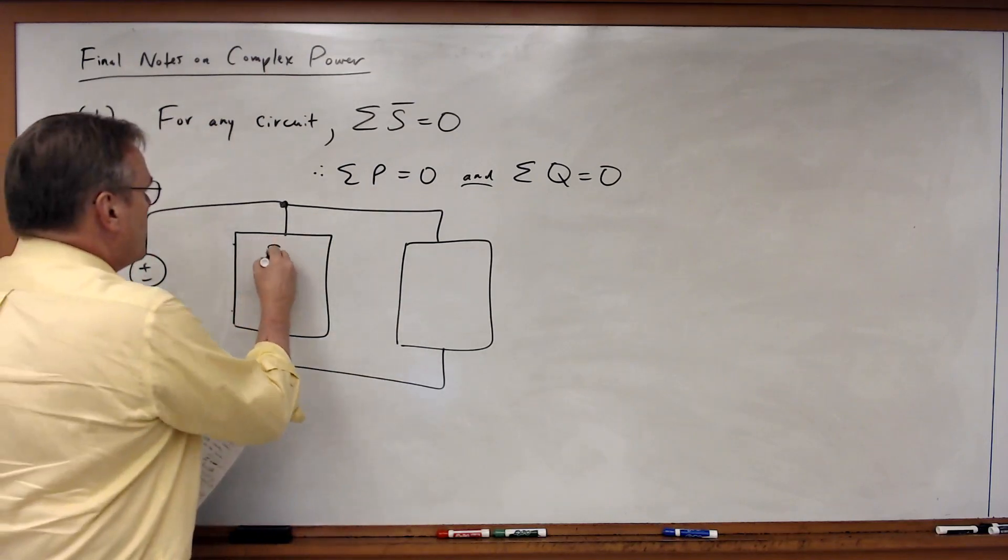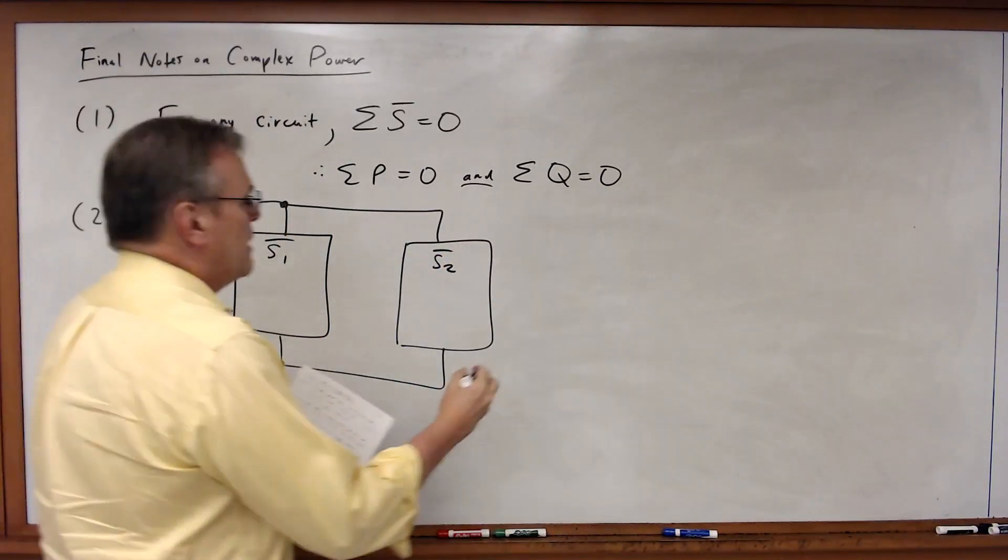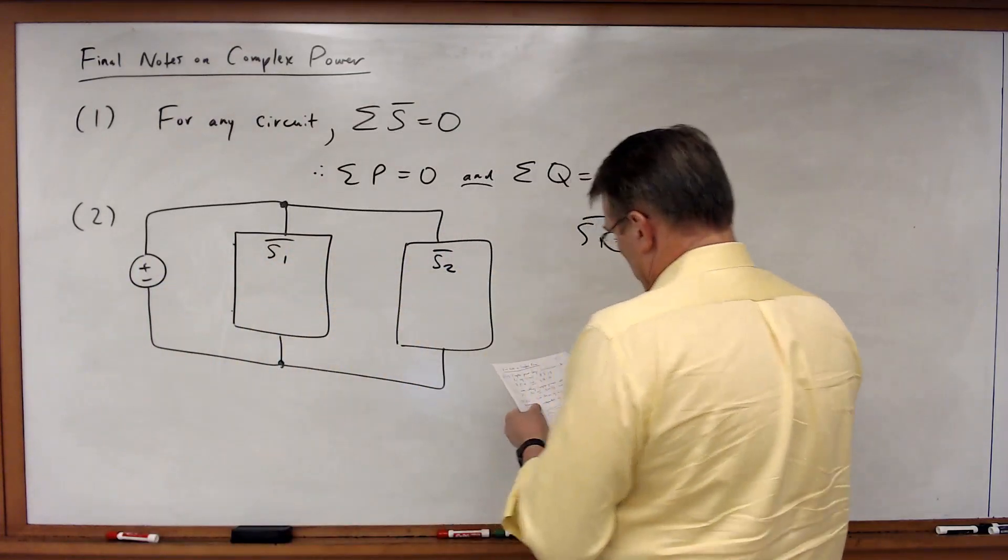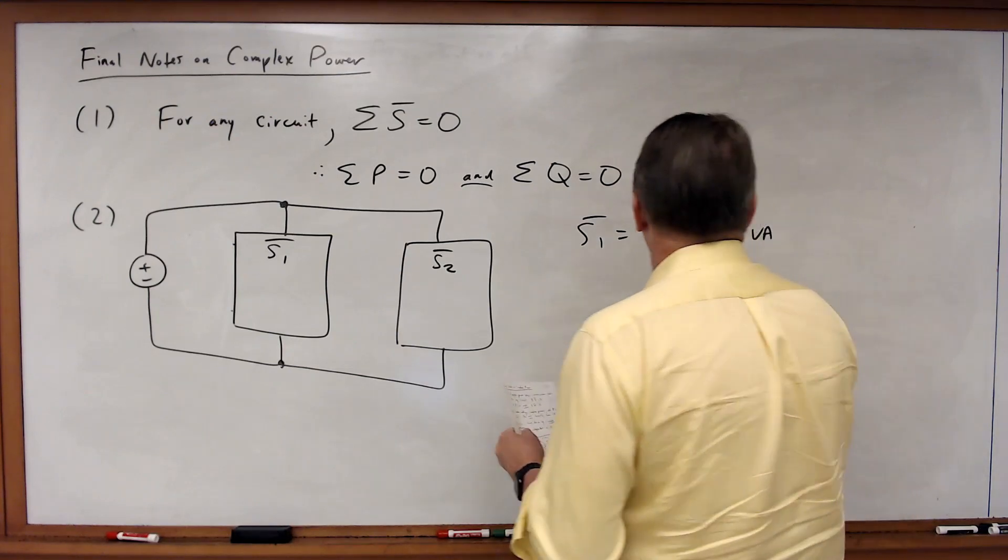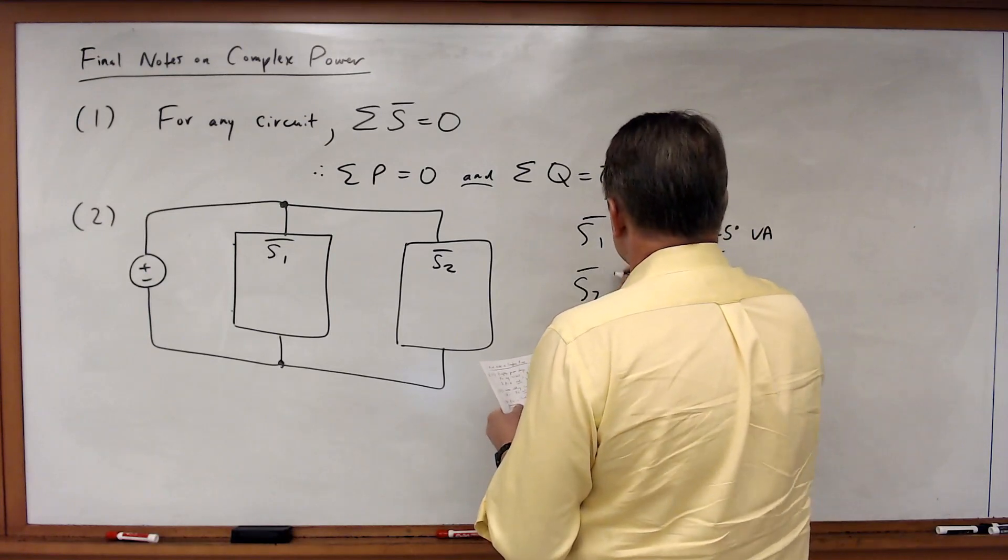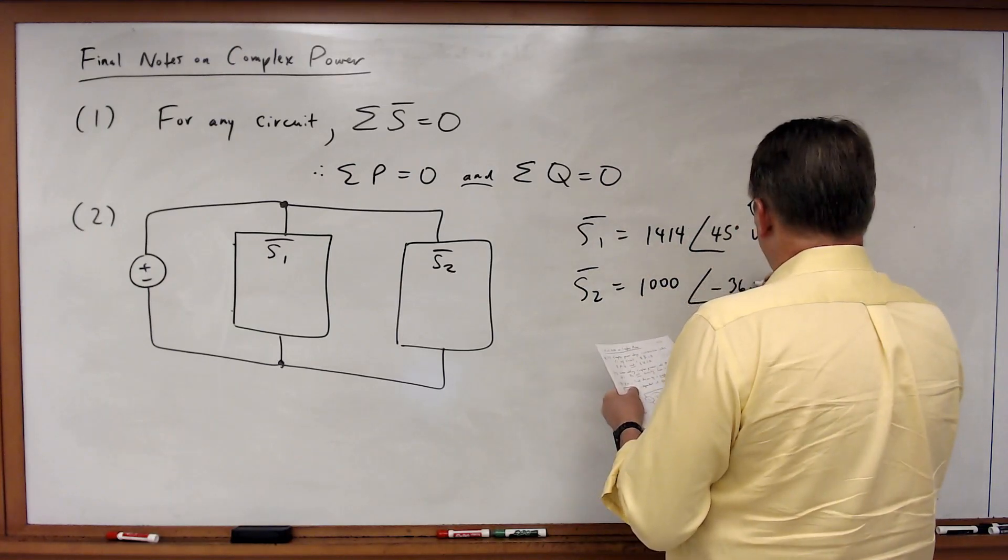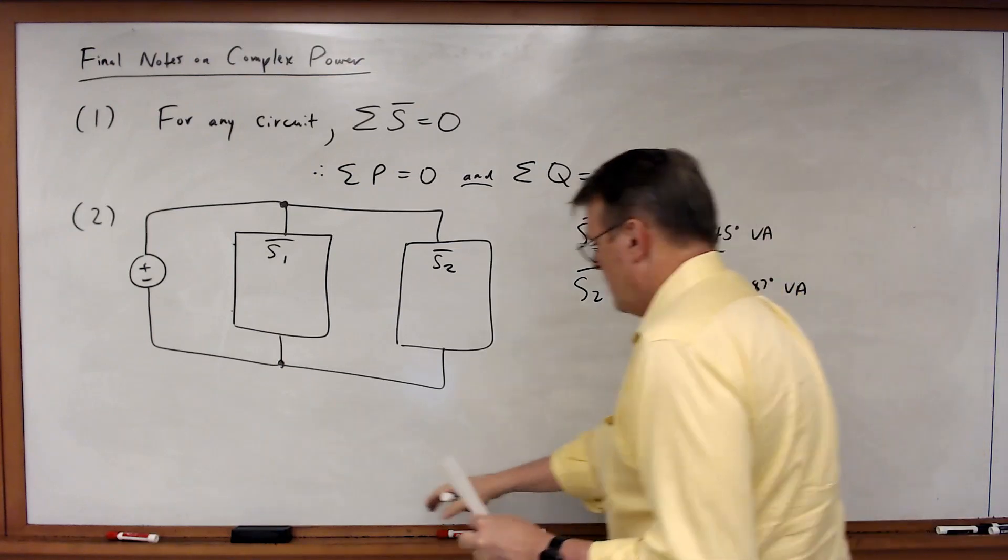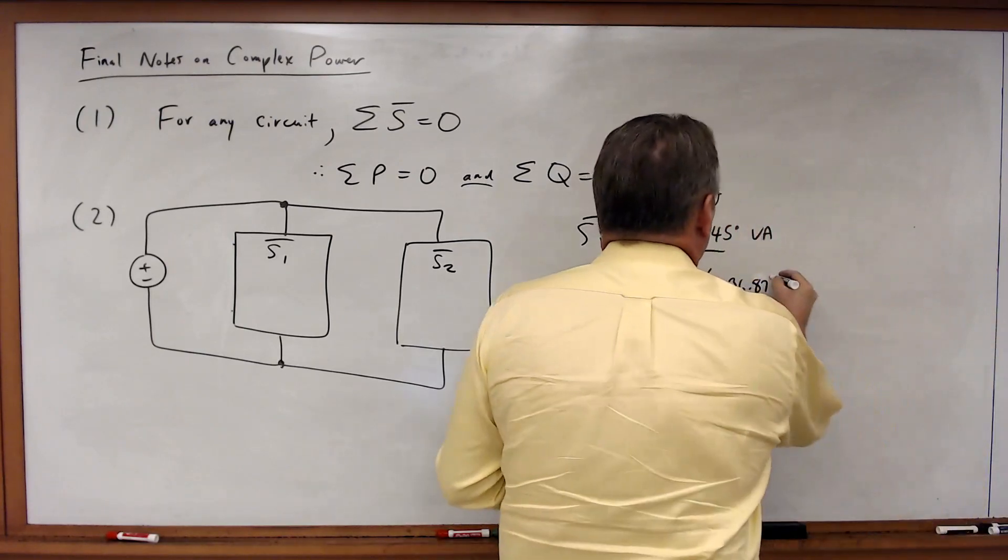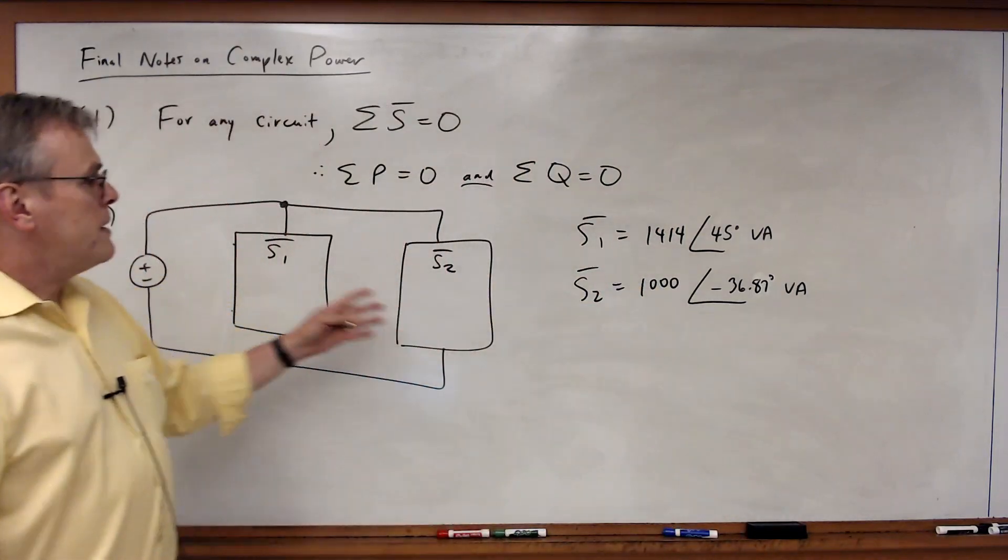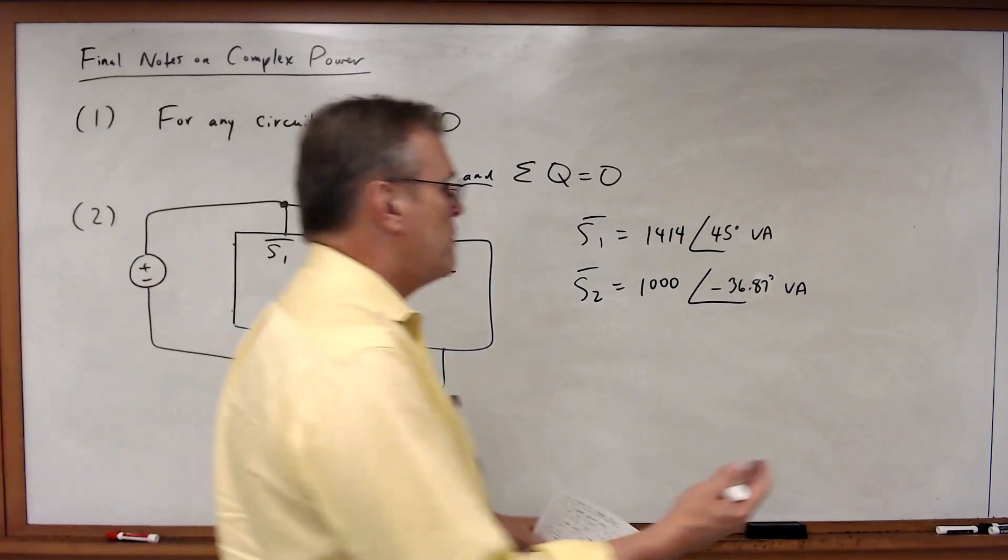So this is S1, this is S2, and you're given the following. For this one, you're told that S1 is equal to 1414 at a phase angle of 45 degrees volt amperes, and S2 is equal to 1000 at a phase angle of minus 36.87 degrees volt amperes. So you're given this and you're asked, what is the total apparent power for this system, for these two loads together?